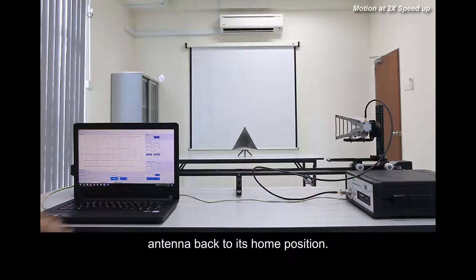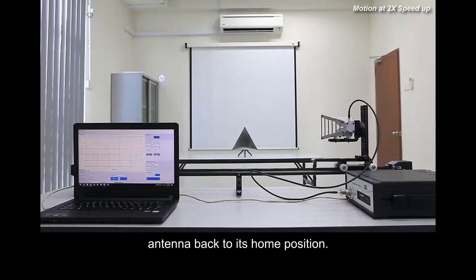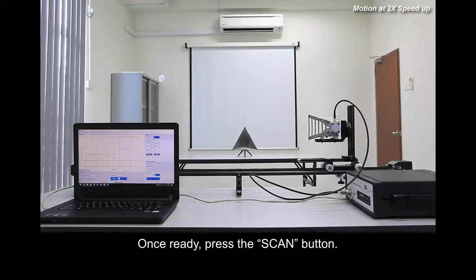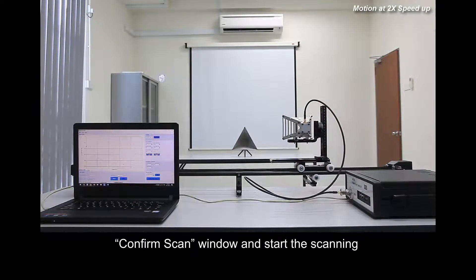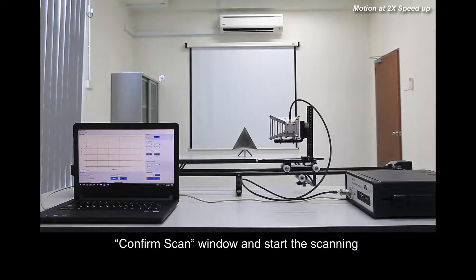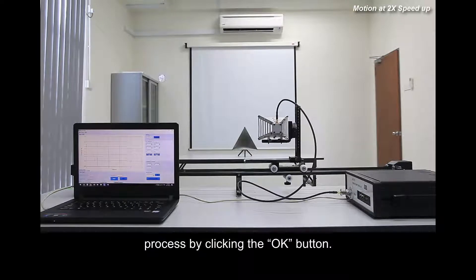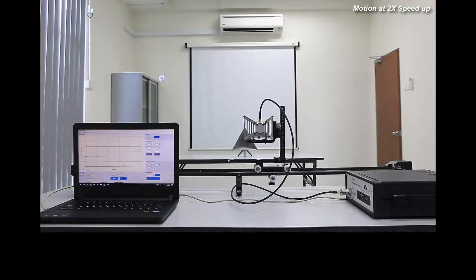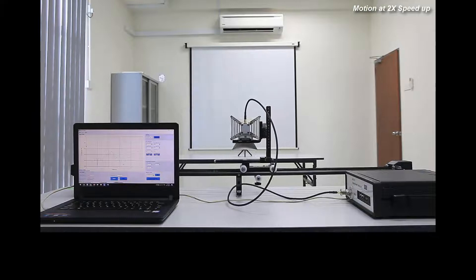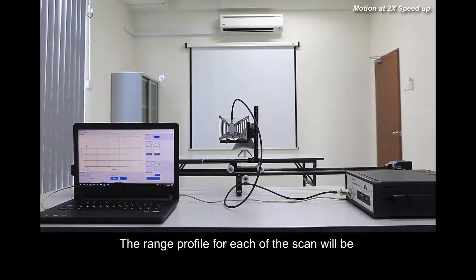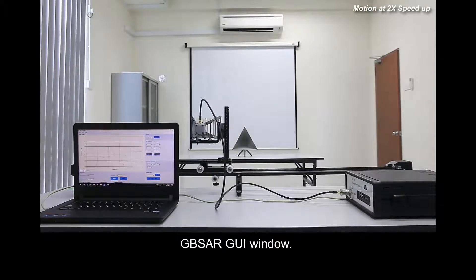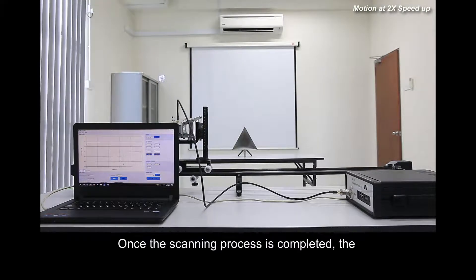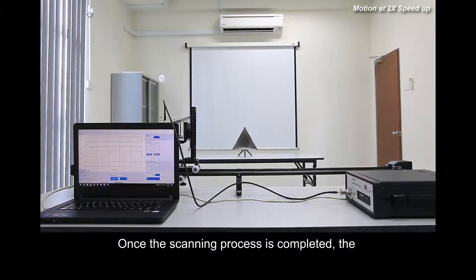Press the home button to move the antenna back to its home position. Once ready, press the scan button. Add a description for this experiment in the confirm scan window and start the scanning process by clicking the OK button. The range profile for each of the scans will be recorded and displayed in the GBSR GUI window.